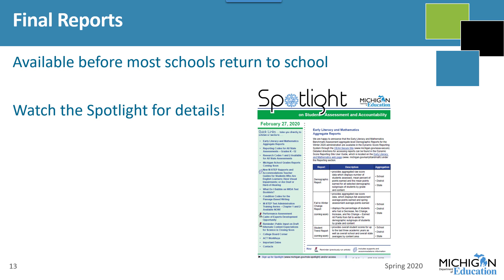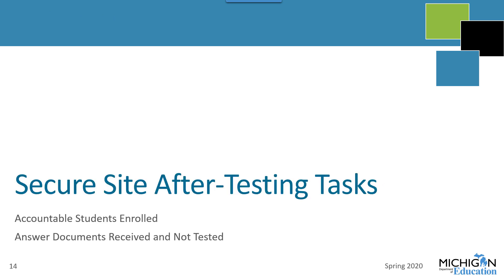Final reports become available in late August. Make sure you watch the spotlight — there will be announcements posted there when the final reports become available. When they are available, make sure you look for my final reports training. There will also be an Interpretive Guide to M-STEP Reports document providing detailed information about each report. After testing is completed, there are some important tasks that need to be done in the Secure Site. You will need to log in and review the data posted to verify that everything is correct.